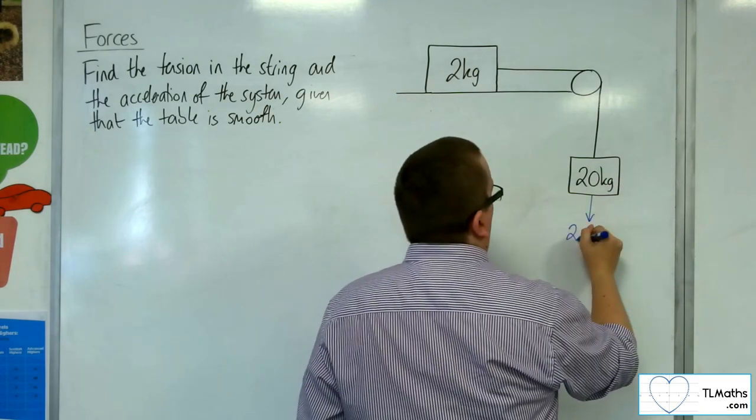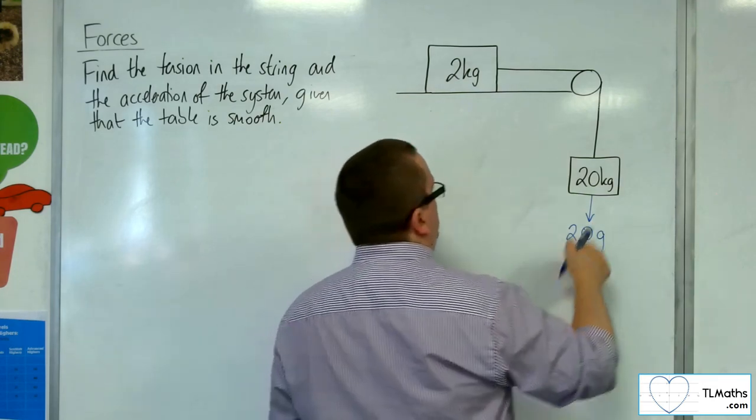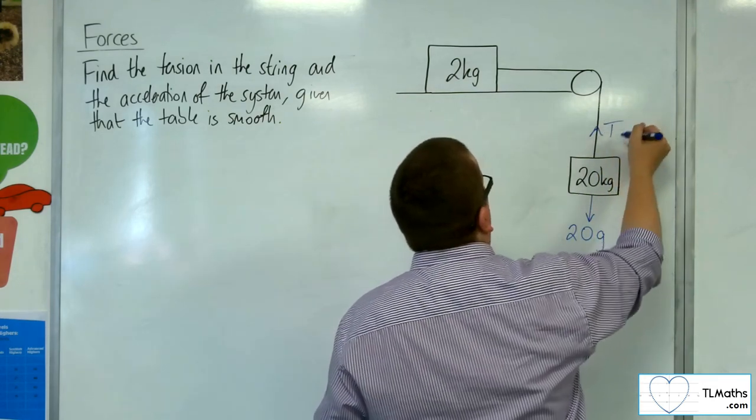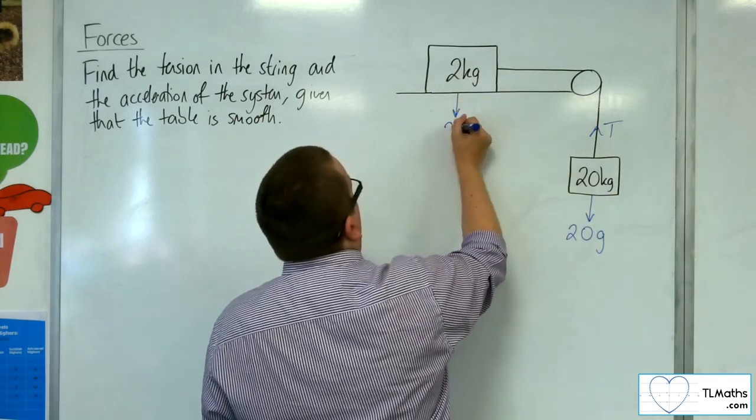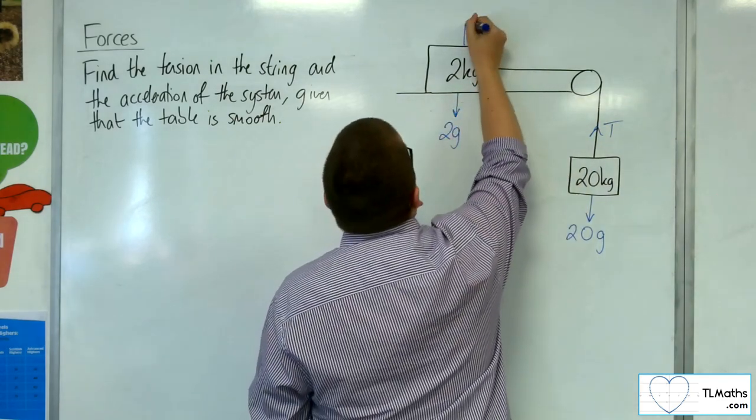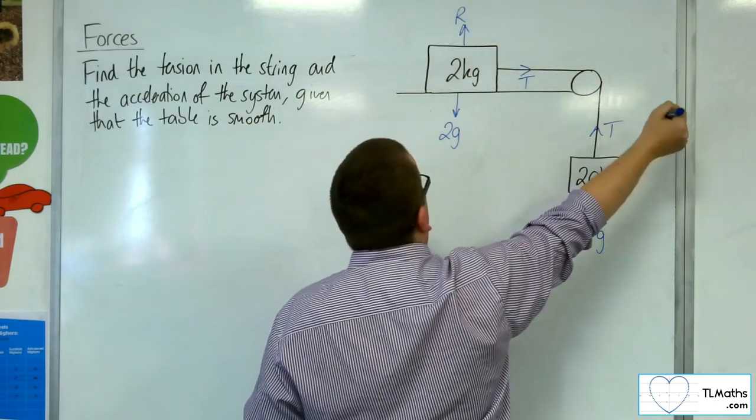We've got the weight working vertically downwards at 20g for this particle, and we've got the tension working upwards. We're going to have the weight of this particle working downwards, which is 2g. We've got the normal reaction force r. We've got the tension in the string, T.